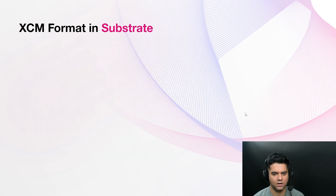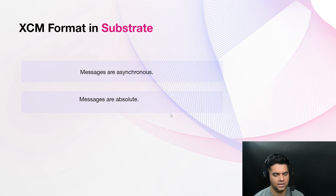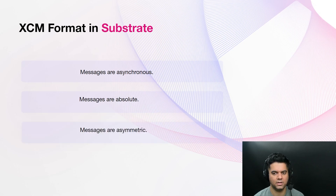There are four important principles to understand about messages that use the XCM format. Messages are asynchronous — after you send a message, there is no expectation that the sending system should wait for a response indicating the message was delivered or executed. Messages are absolute in that they are guaranteed to be delivered and interpreted in order and executed efficiently. Messages are asymmetric and don't return any results back to the sender; you can only communicate results back to the sender separately using an additional message.